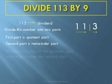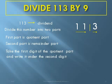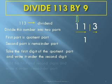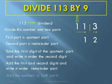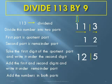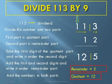Take the first digit of the quotient part and write it under the second digit. Add the first and second digits of the quotient part and write the result under the remainder part. Now add the numbers in both parts. The remainder is equal to 5 and the quotient is equal to 12. This ends the division process by the Nikola method.